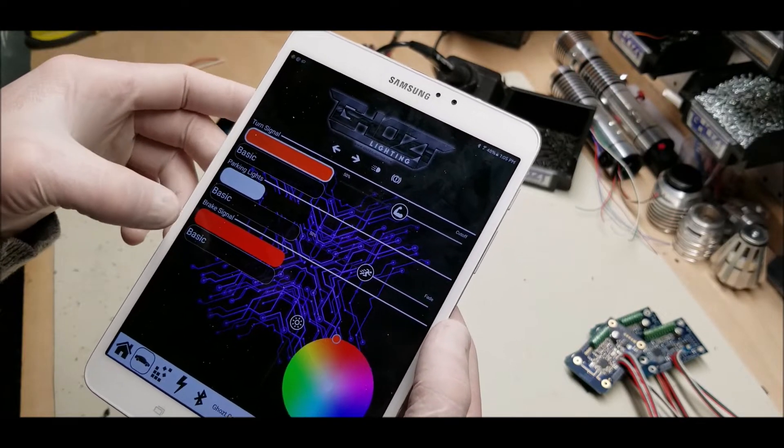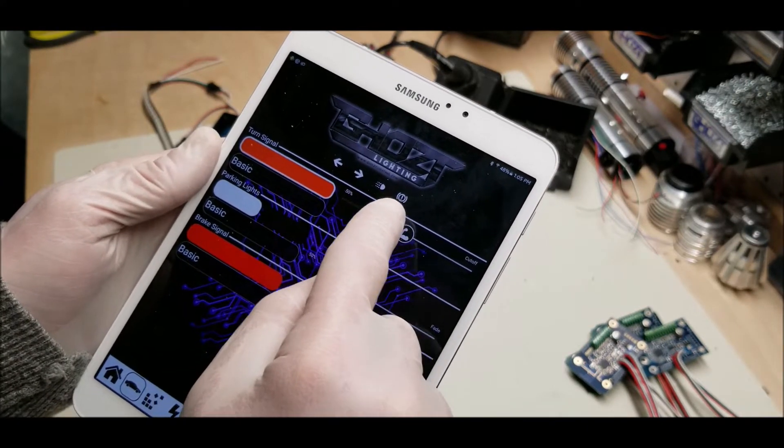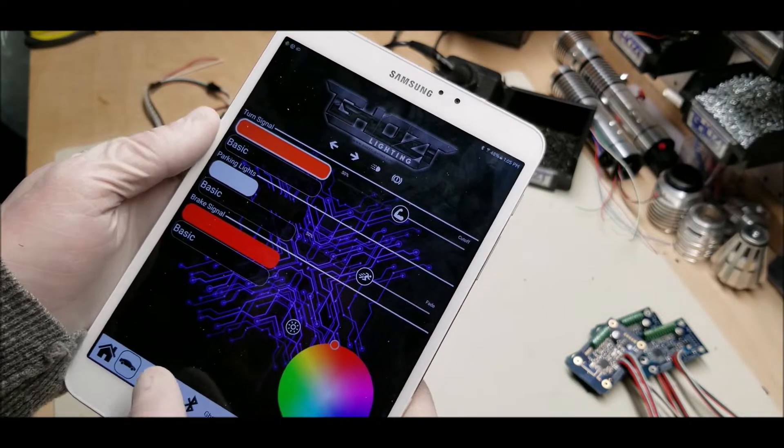of turn signals, brake, and a few other functions. These icons will highlight when the device is actually receiving power on those circuits, so it's nice for troubleshooting.